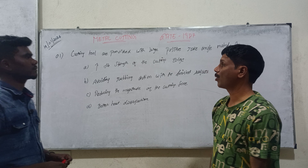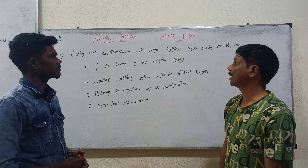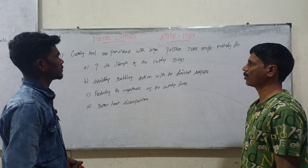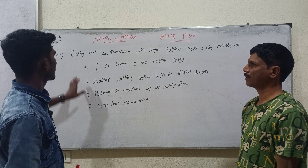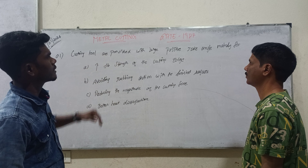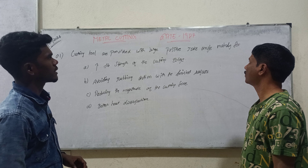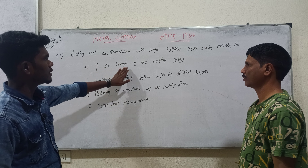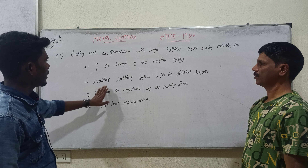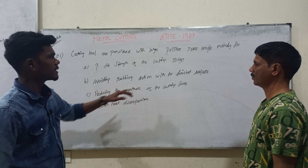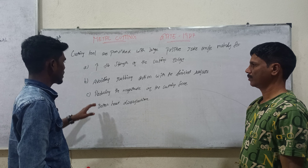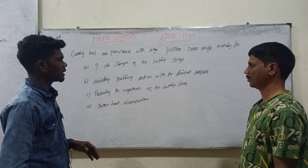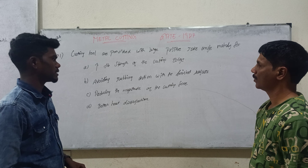This is Roshra Aaswari from Goom Rajapit Madhinik. The topic is metal cutting, related to the year 1987. Cutting tools are provided with a large positive rake angle mainly to increase the strength of the cutting edge, avoid rubbing action with the finished surface, reduce the magnitude of the cutting force, and provide better heat dissipation.